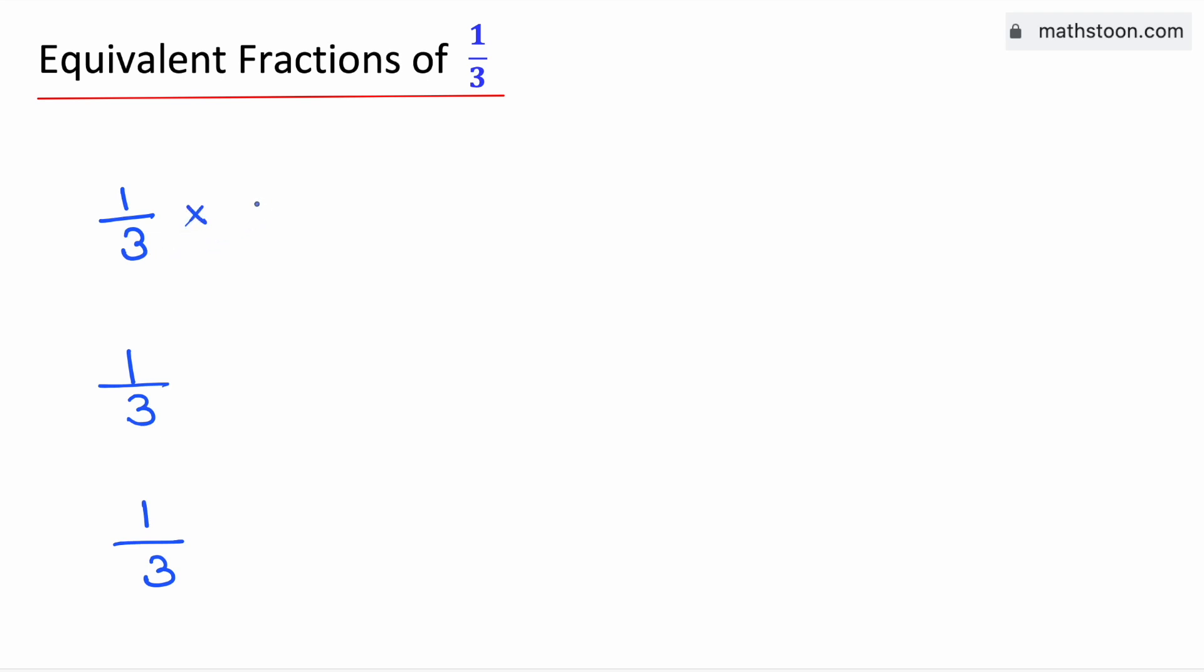In the first case, we will multiply by 2. By doing so, we have 1 times 2 in the top, which is 2, and 3 times 2 in the bottom, which is 6. To get the second equivalent fraction of one-third,